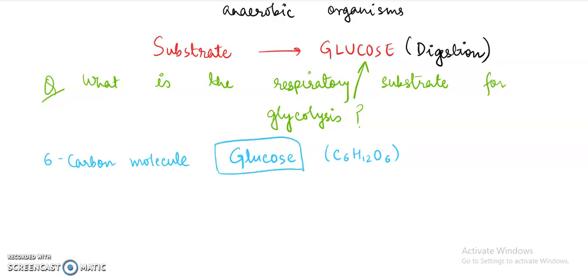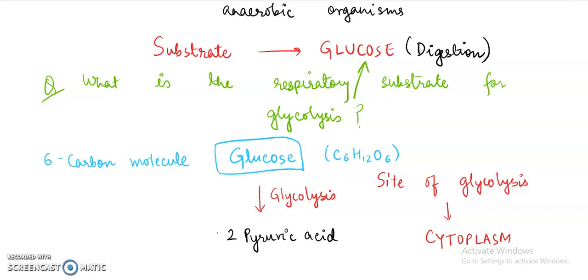Glucose is going to start the glycolysis. And what is the site of glycolysis? The site of glycolysis means the place where it occurs. So glycolysis occurs in the cytoplasm of the cell. And glucose undergoes glycolysis to form what? To form two molecules of pyruvic acid. Now pyruvic acid is a three carbon molecule.